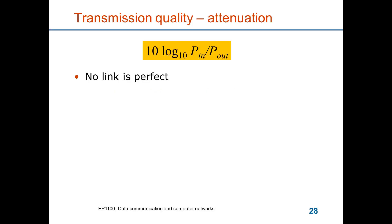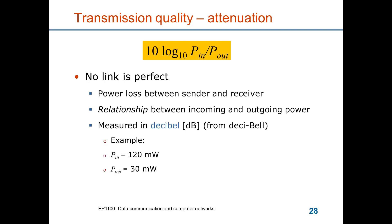The first transmission quality we consider is called attenuation — it's a dampening. It means that you send a signal into a medium, but the signal will lose energy in the medium. No link is perfect, and we can look at the ratio of the input power to the output power. This is often expressed in decibels: we take the logarithm of the ratio of the input and output powers and multiply it by 10. For example, if you have an input power of 120 mW and receive out 30 mW, then you have an attenuation of roughly 6 dB.